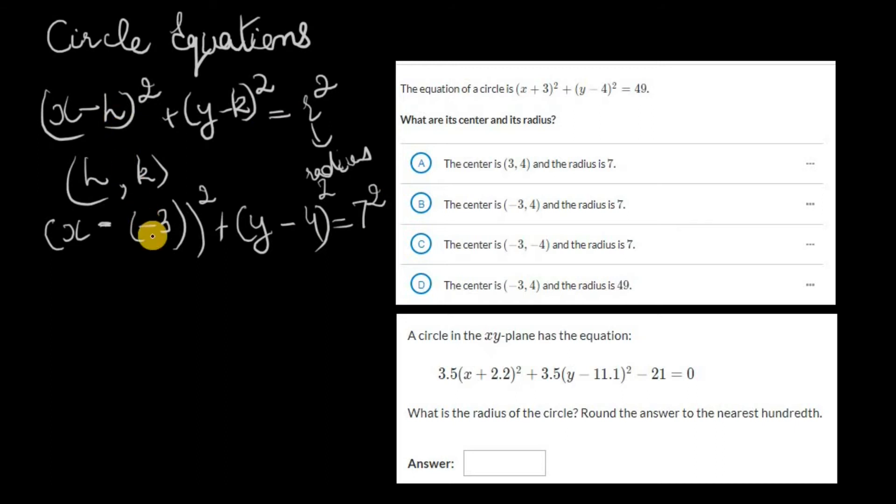So our h here would be -3 and our k would be 4. You can just compare these two equations. This is our center and our radius is equal to 7. The correct option here would be (-3, 4), so this is going to be B.